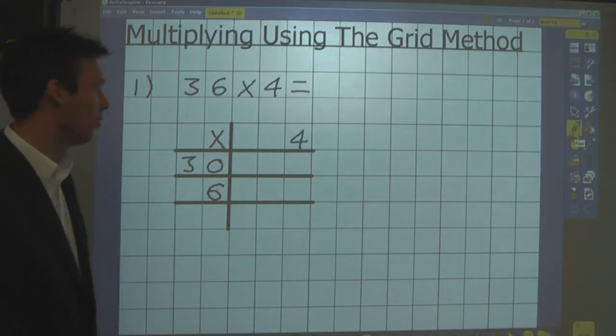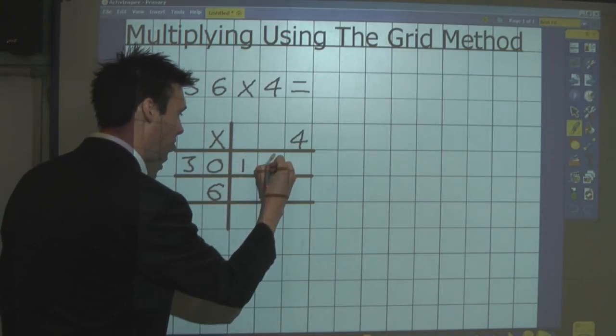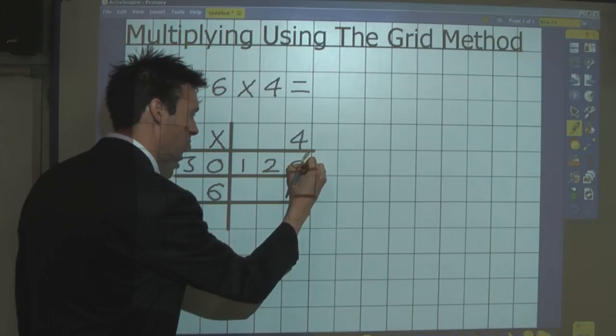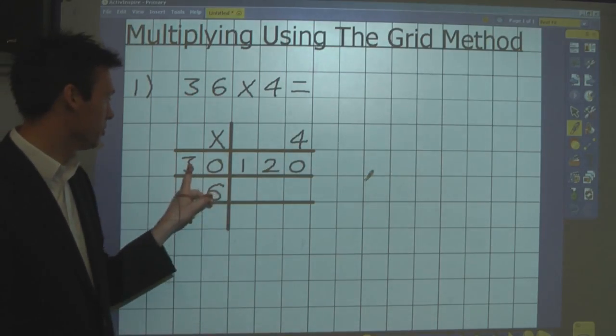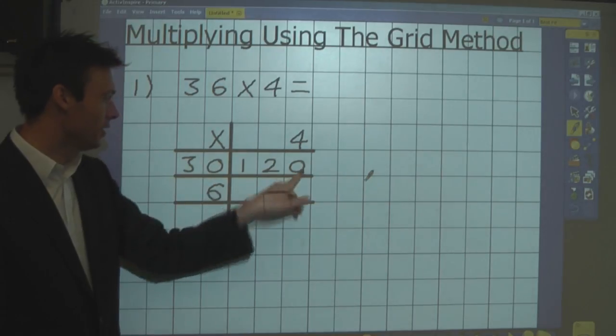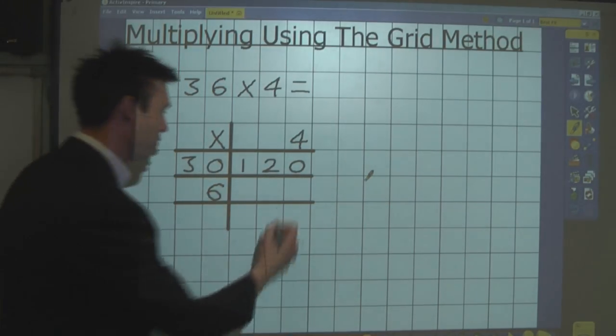30 times 4 is 120, and children will know that because of their knowledge of times tables. 4 times 3 is 12, times 10 is 120, and 4 times 6 is 24.